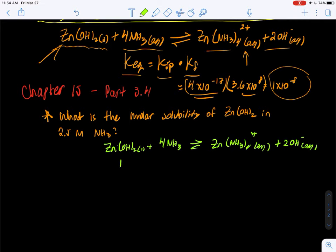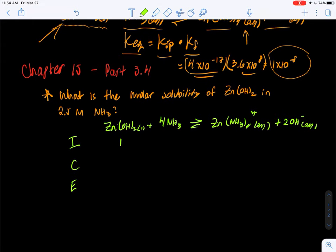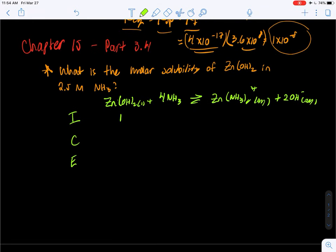So zinc hydroxide plus four ammonias. Initially you have one chunk of the solid and you have your 2.5 molar ammonia, none of this complex, none of this hydroxide. There's technically 1×10^-7 of hydroxide but we're going to assume that it's close enough to zero.